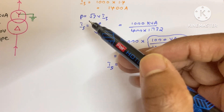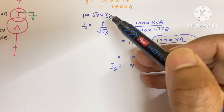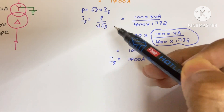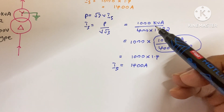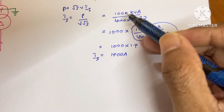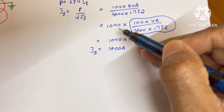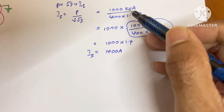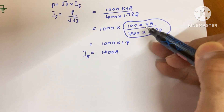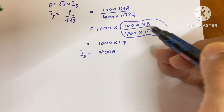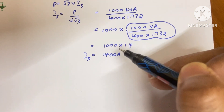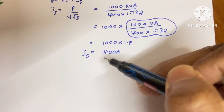We know that the three-phase power equation is P = √3 × V × I. So Is = P / (V × √3) = 1000 kVA / (400 × 1.732). Here the kVA is converted to VA by multiplying by 1000, and when we calculate 1000 / (400 × 1.732) we get 1.4. That means 1000 multiplied by 1.4 gives 1400 A.